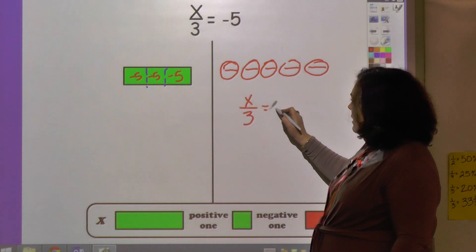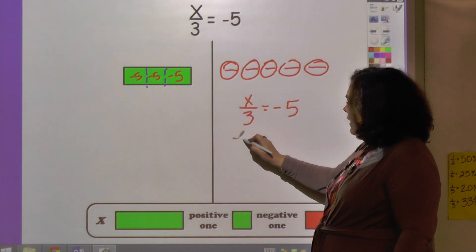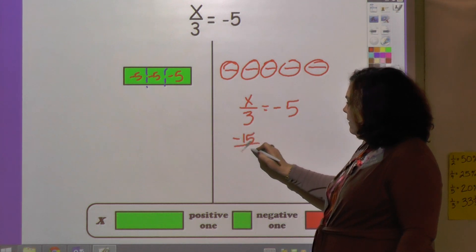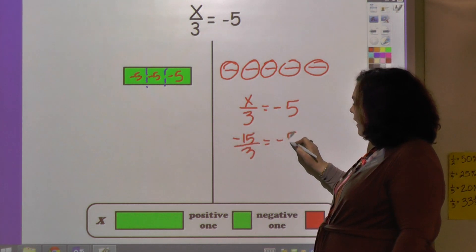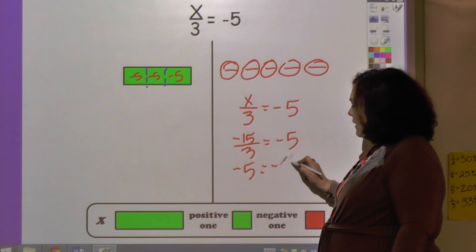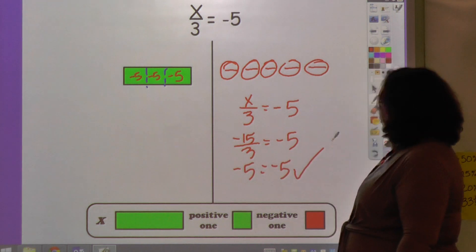So let's try it out and see. x divided by 3 equals negative 5. Negative 15 divided by 3 equals negative 5. Yes, negative 5 equals negative 5. So that checks.